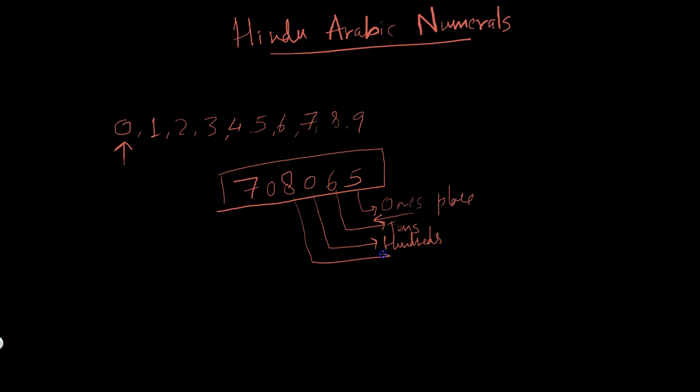This guy here is thousands place. As you can see, we are just incrementing this by 10. Increment this thousand by 10 and you're going to get ten thousands place.